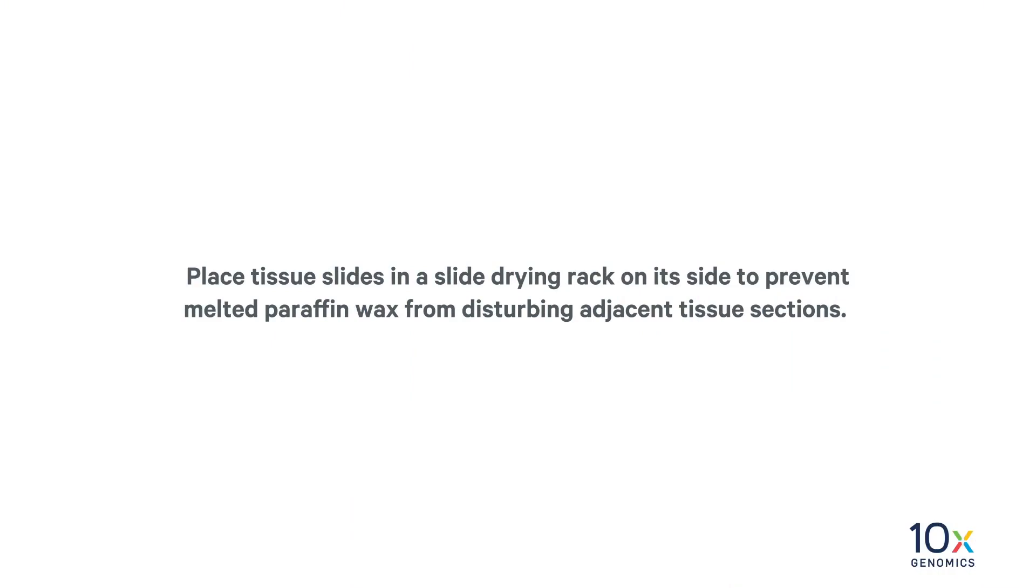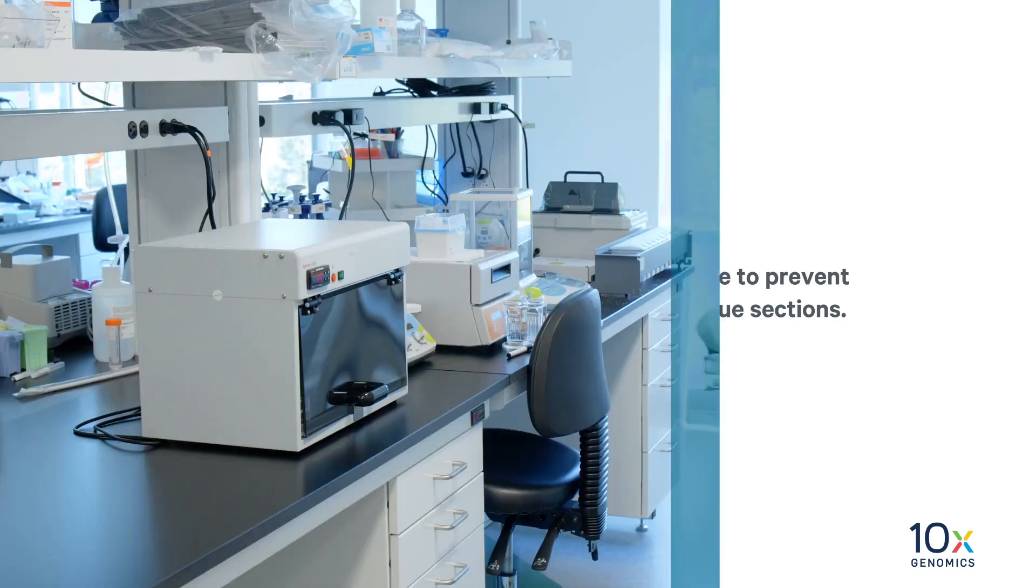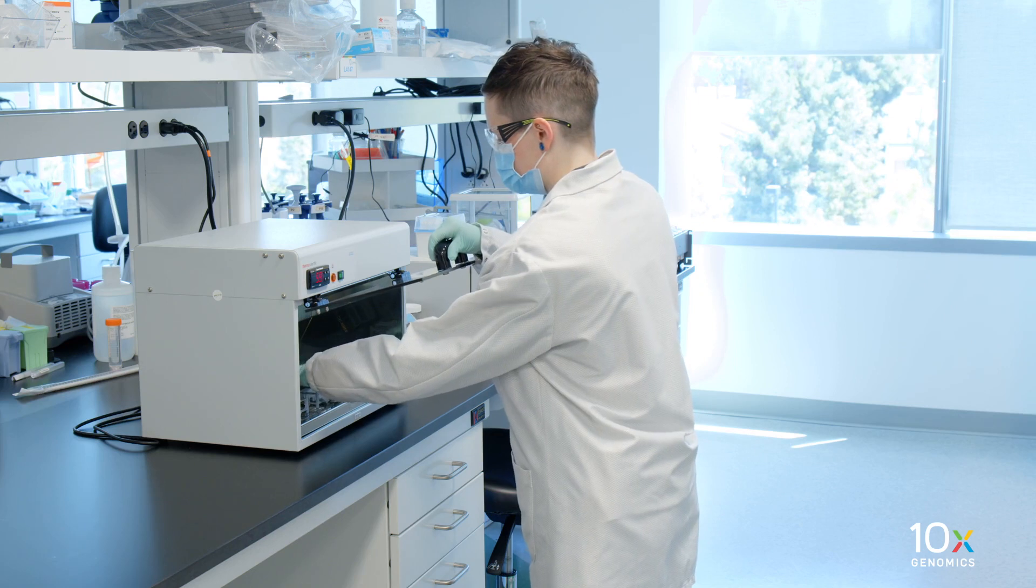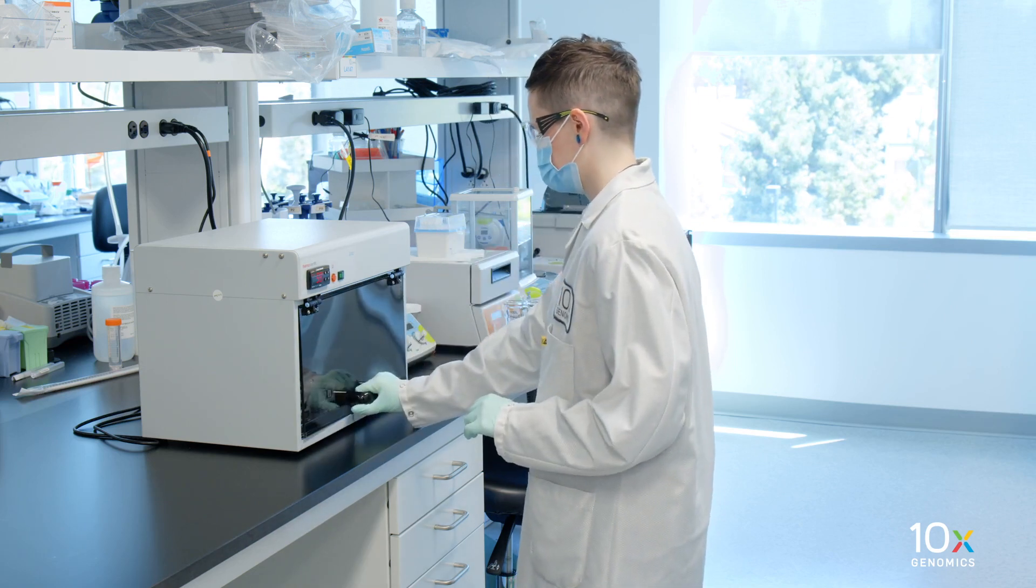Now we will dry the sections. Place tissue slides in a slide drying rack on its side to prevent melted paraffin wax from disturbing adjacent tissue sections. Place the drying rack in a section dryer and incubate for three hours in an oven at 42 degrees Celsius.